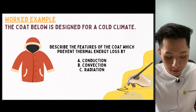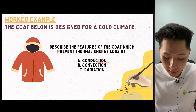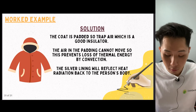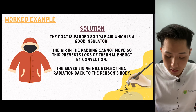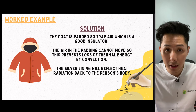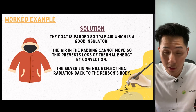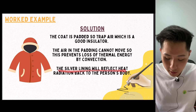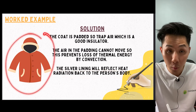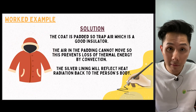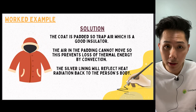For the worked example: a coat designed for a cold climate — describe the features that prevent thermal energy transfer by conduction, convection, and radiation. First, the coat is padded, meaning there's a gap between materials. Trapped air is a good insulator because air is not a good conductor. Second, the air in the padding cannot move, so this prevents loss of thermal energy by convection. Third, a silver lining reflects radiation back to the person's body — just like a thermal flask — so the heat your body generates is reflected back to yourself.